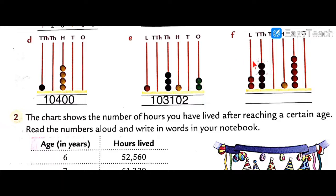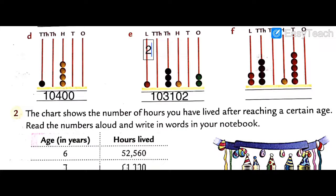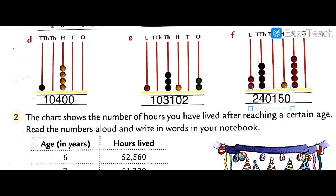Question F. In the lakhs place there are two — two lakh. Ten thousand: four, so forty thousand. Thousands: zero. Hundreds: one. Tens: one, two, three, four, five — fifteen. Ones is zero. So the answer is two lakh, forty thousand, one hundred, and fifteen.